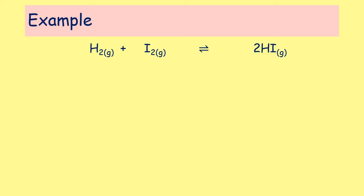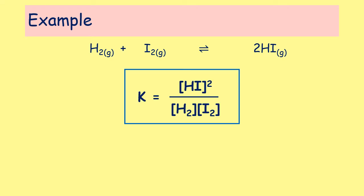Here we have an example: hydrogen reacting with iodine, reversibly setting up an equilibrium with hydrogen iodide. The K expression is equal to the concentration of products, so [HI] — and because there are two HI molecules in the equation, that is [HI]². That is divided by the concentration of H₂ to the power of 1 and I₂ to the power of 1, so we don't need to write those powers explicitly.